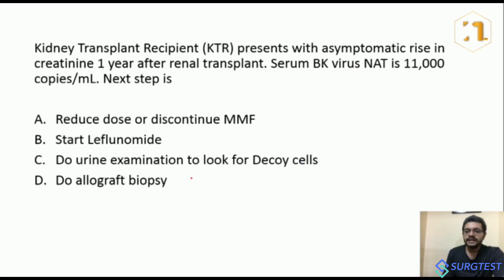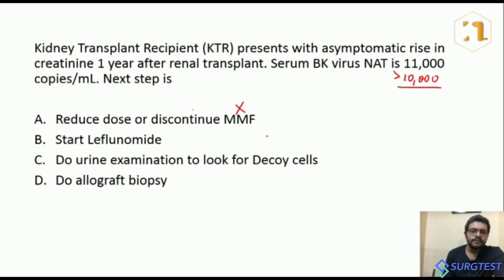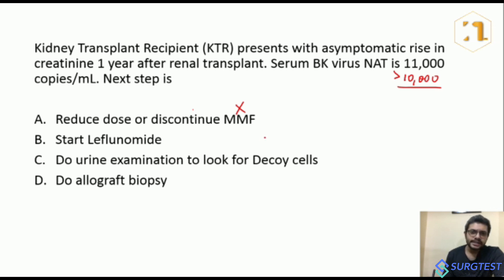Returning to the MCQ: Option A — reduce dose or discontinue MMF — is not the answer. While it is true that a level above 10,000 copies per ml signifies probable BK virus nephropathy, only persistently high levels warrant reduction or discontinuation of MMF. Additionally, the asymptomatic rise in creatinine could be due to acute rejection, calcineurin inhibitor toxicity, or other causes — we cannot reach a diagnosis of BK virus nephropathy based on plasma levels alone.